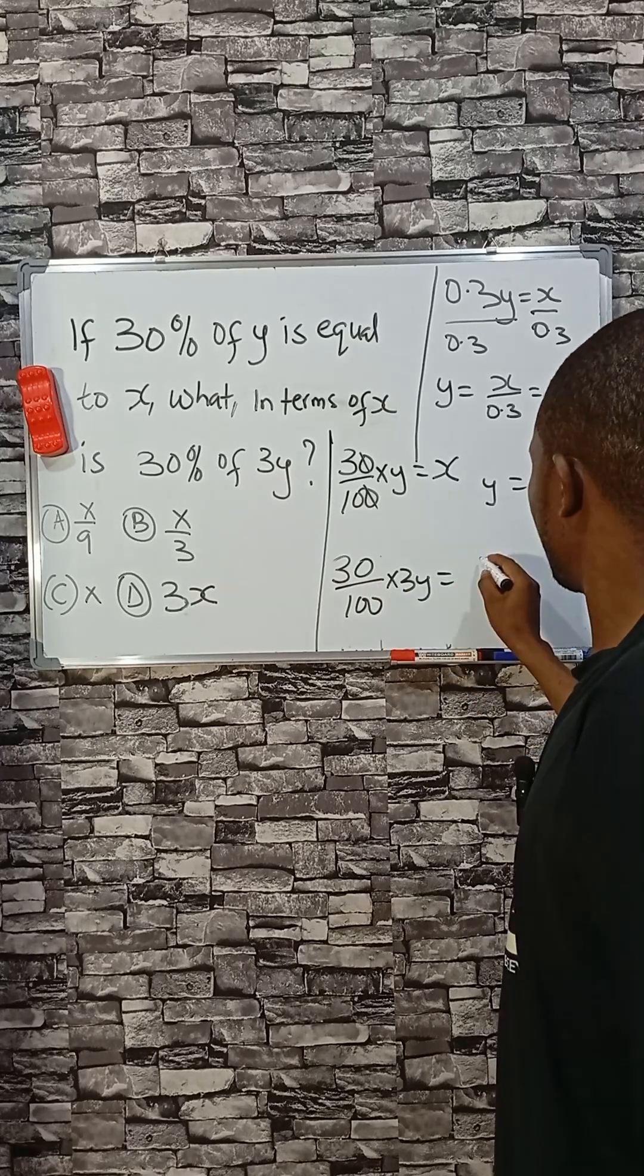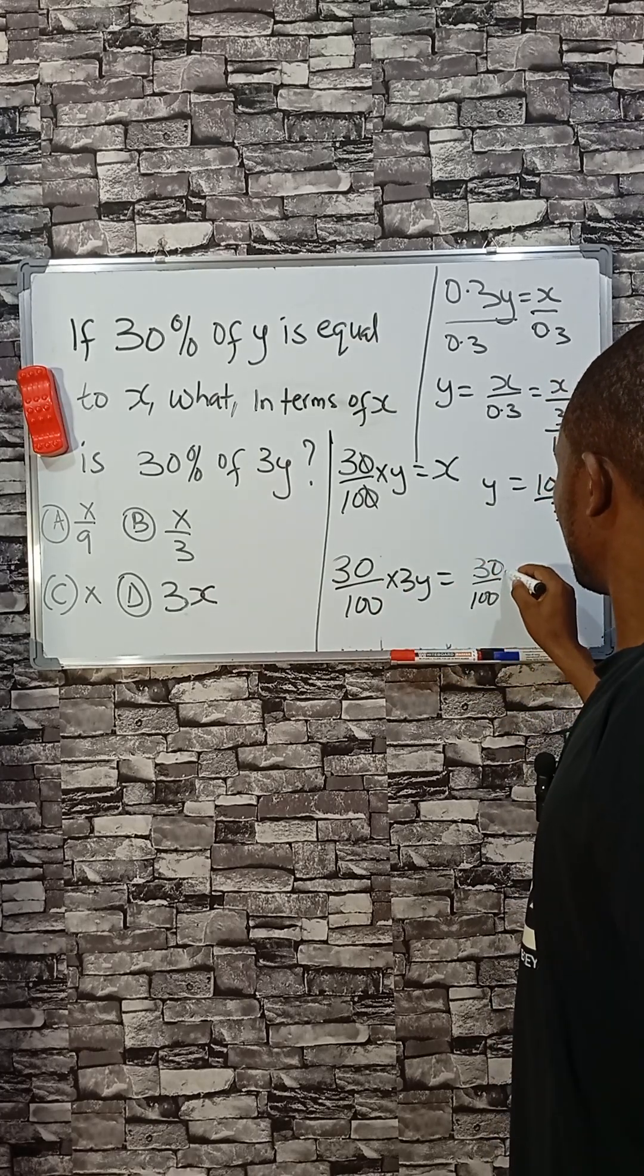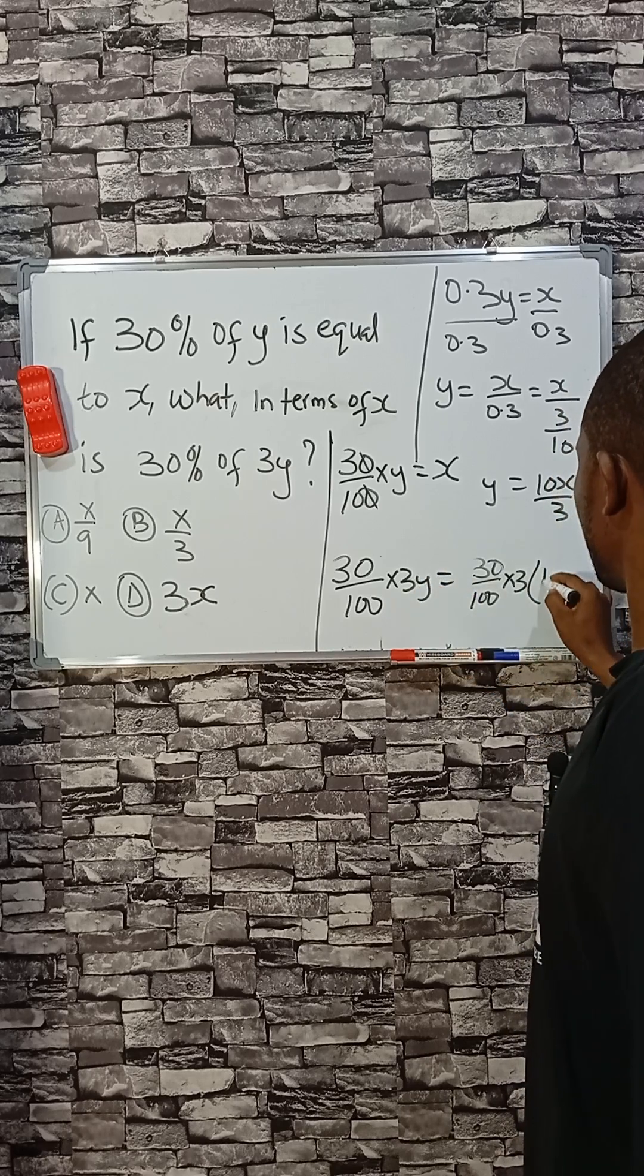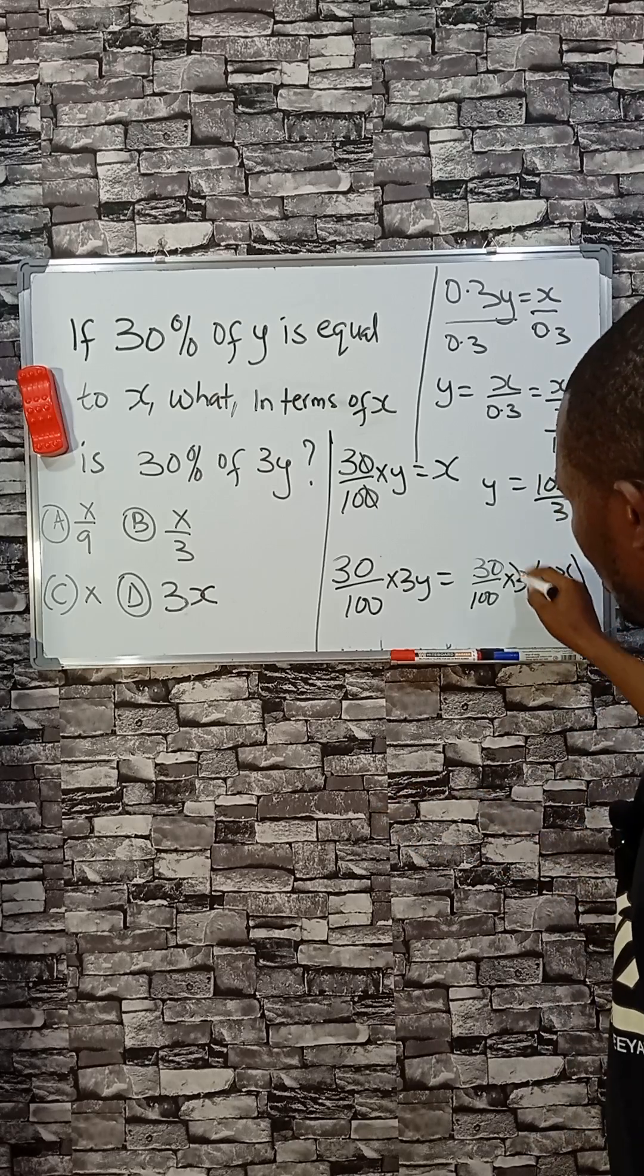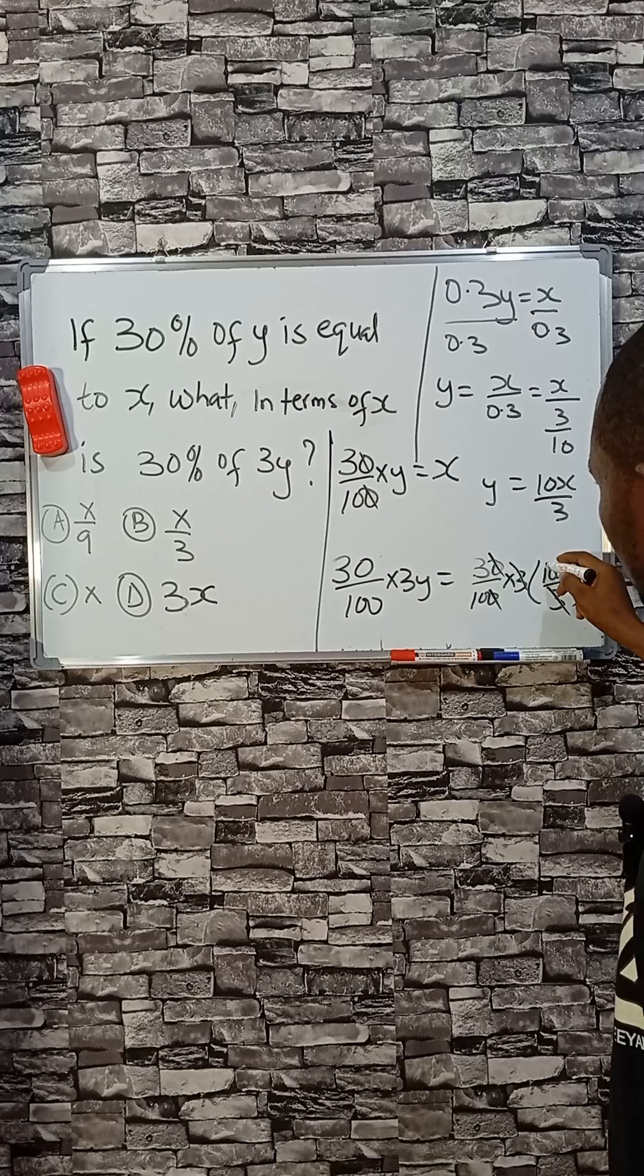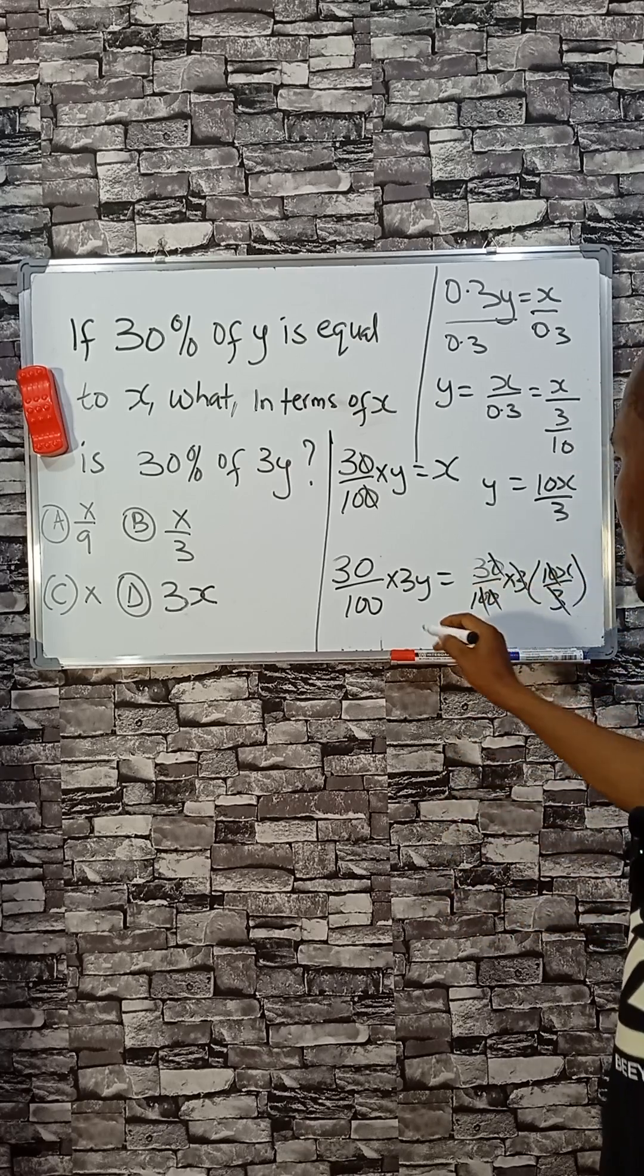So here we have 30 divided by 100 times 3. In place of y, we put 10x divided by 3. 3 here will cancel this, 0 cancels this one, this one cancels this, so we're left with 3 times x, which is 3x.